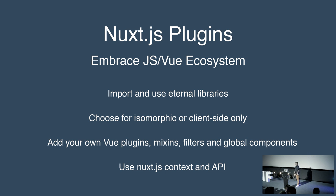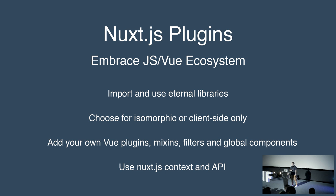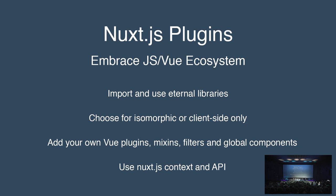We have Nuxt.js plugins. When you want to work with server-side rendering, you encounter problems with DOM elements that don't exist on the server-side — for example, the document object is undefined because it doesn't exist on the server. By creating Nuxt plugins, we embrace the JS and Vue ecosystem. You can import and use external libraries and make them compatible with Vue server-side rendering. You can choose isomorphic or client-side-only libraries, create your own Vue plugins, mixins, filters, and global components. You can also use the Nuxt.js context and inject API.